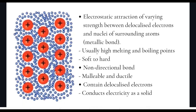The hardness of metals also ranges from soft to hard due to the varying strength of the metallic bond. Many metals are hard as the metallic bonds are strong and require a large physical force to overcome them, whereas the group 1 metals are soft and can be cut easily with a butter knife.